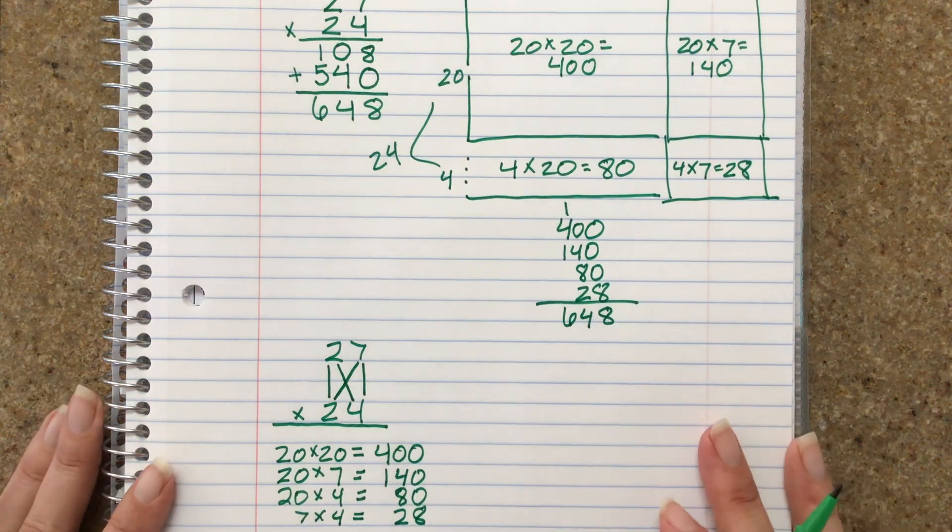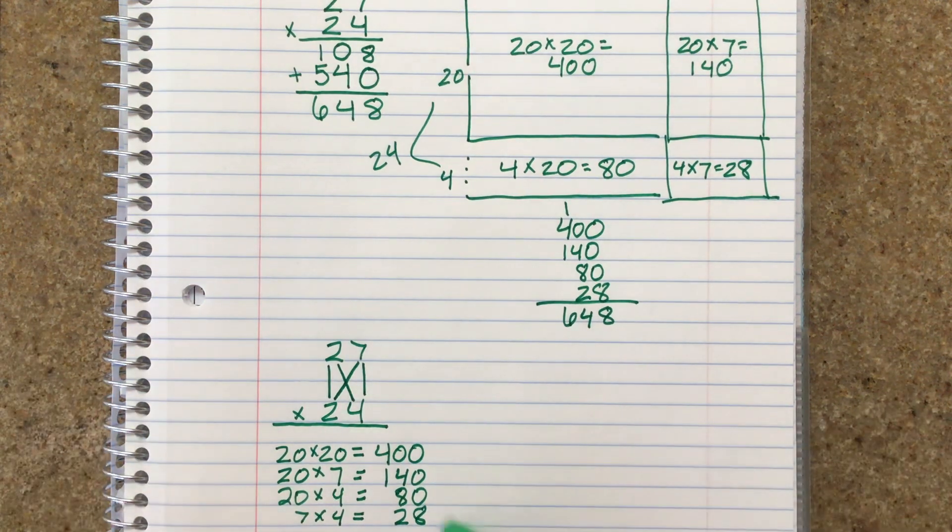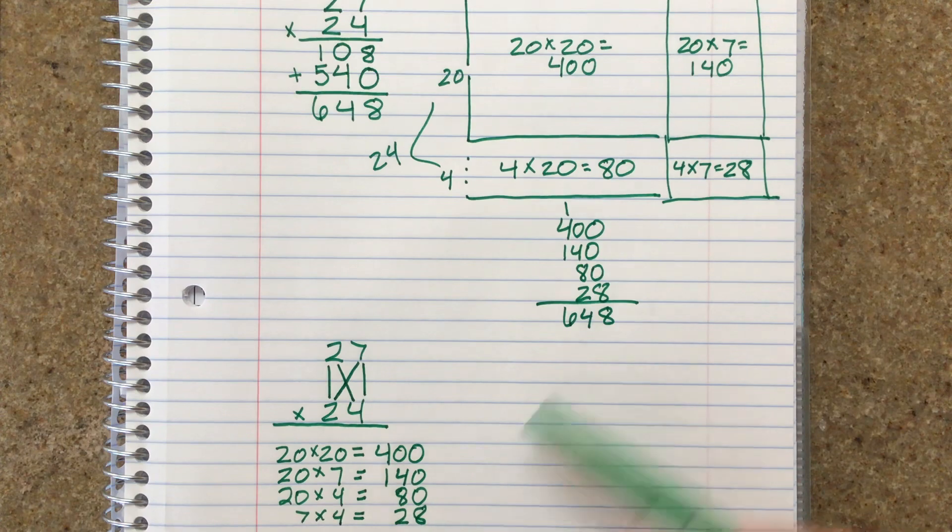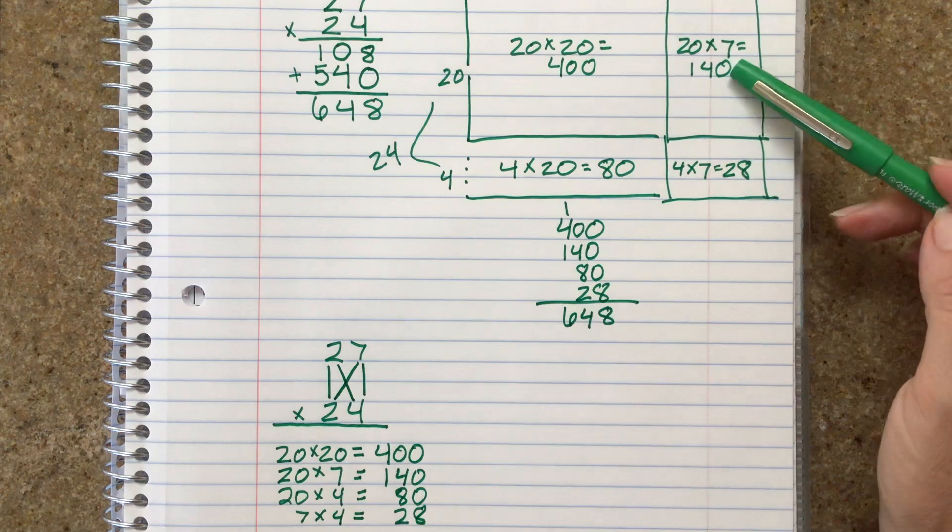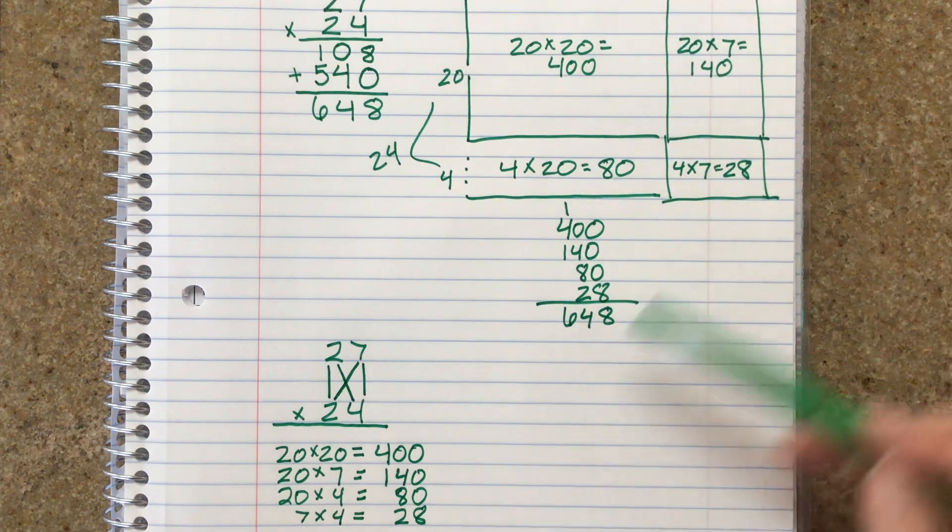Okay, so here you can see that this, these numbers here, match up with the numbers in these boxes here, the 400, the 140, the 80, and the 28.